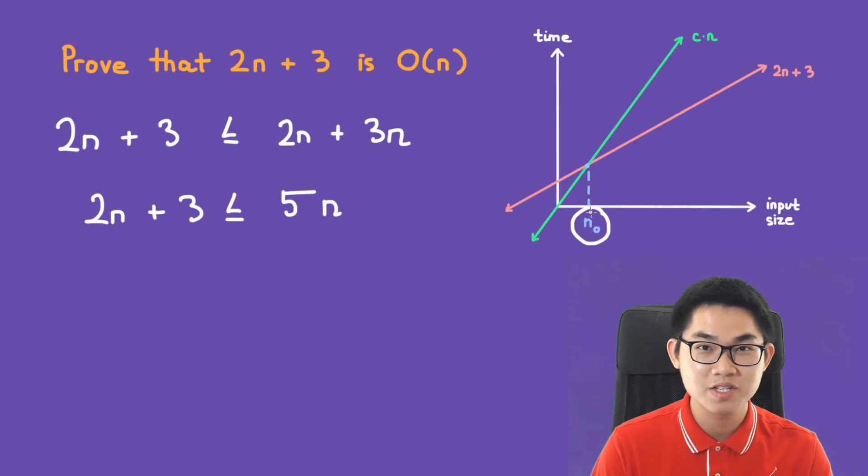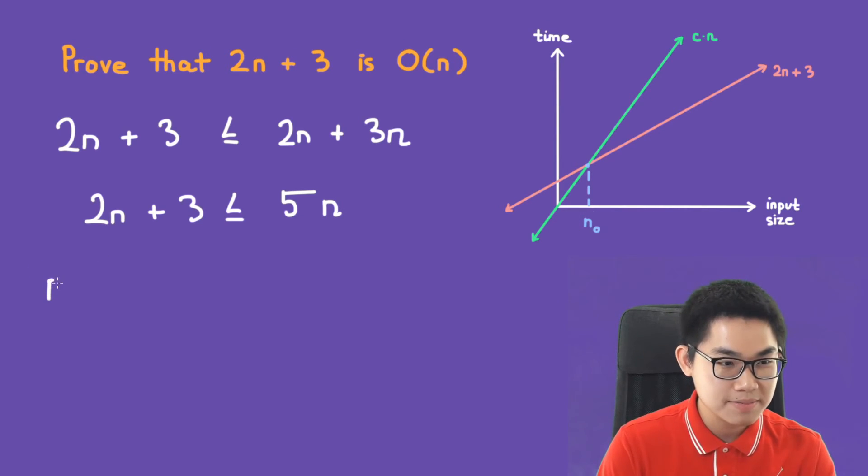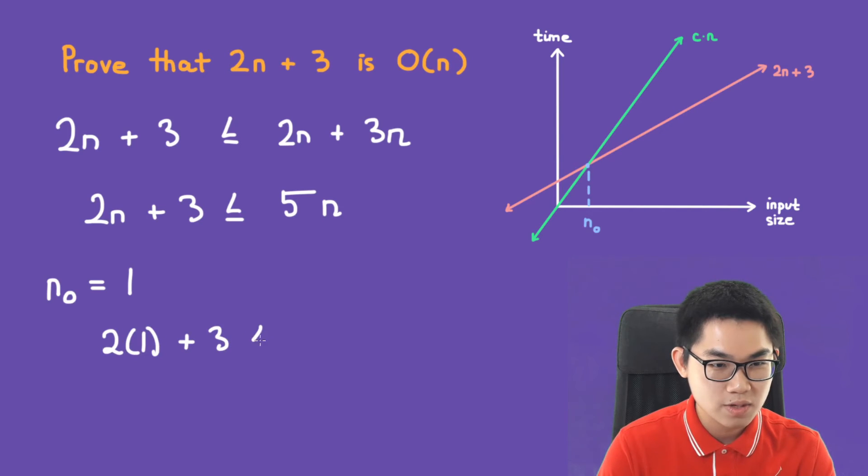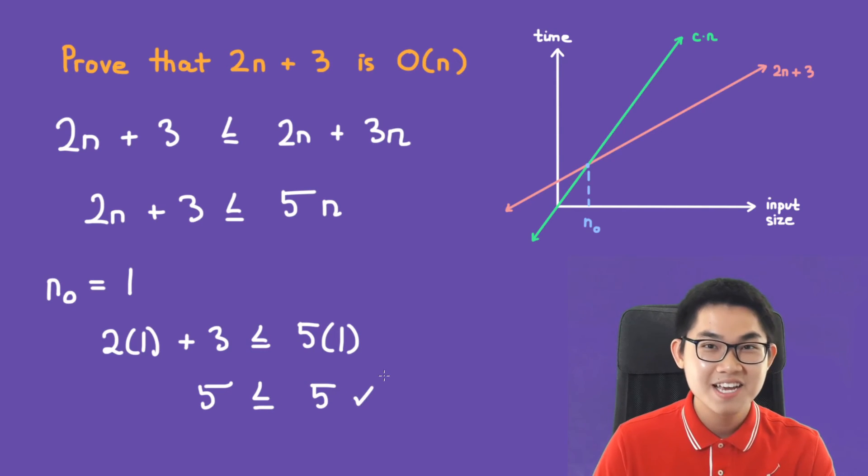Now what is n naught going to be? We can try to substitute n naught equals 1. We always start at 1 and let's see. We put 1 into the inequality: 2 times 1 plus 3 which is less than 5 times 1, so 5 is less than 5. This is correct, so our n naught is going to be 1.